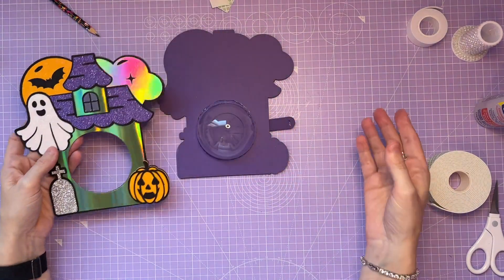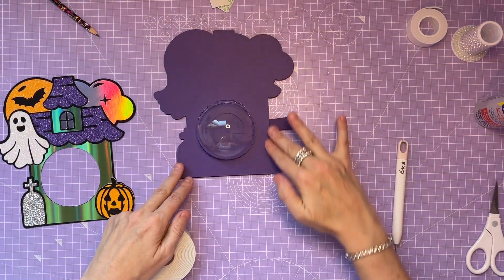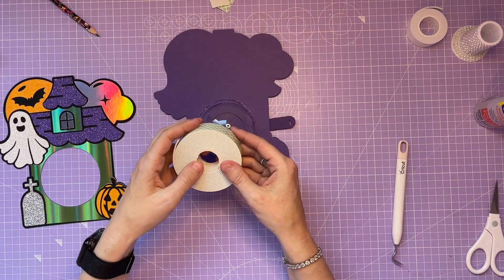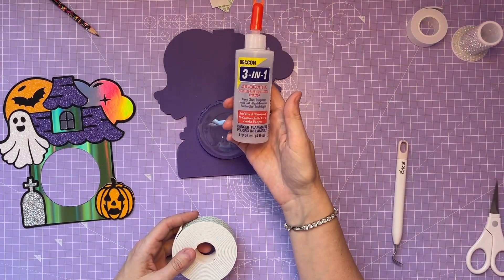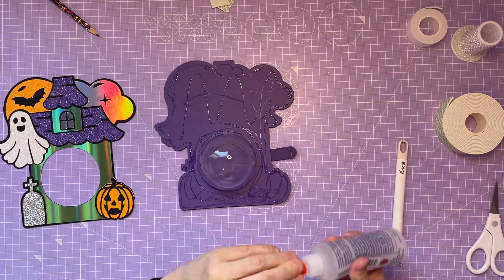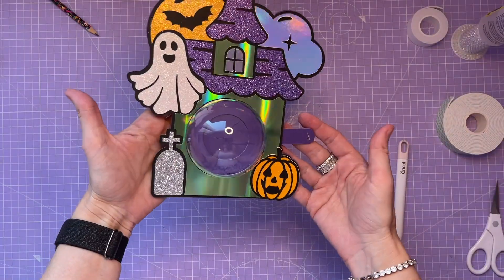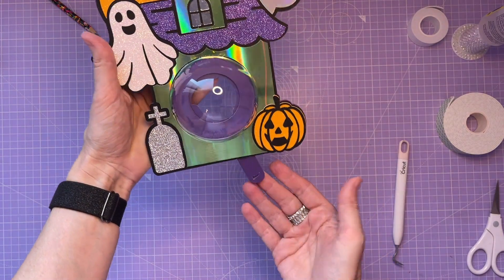The next step is obviously to put the front on. Now you can either use this double-sided foam tape all over this area which will give more of a 3D effect, or you can just use the Beacon 3-in-1 glue. I'm just going to use the glue today for ease. Just place it on, give it a squeeze, and that's our finished candy holder.